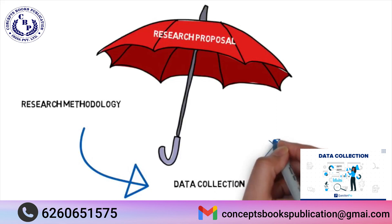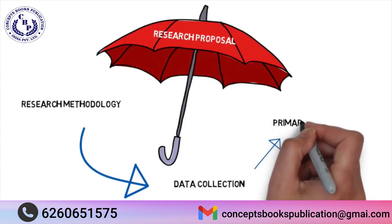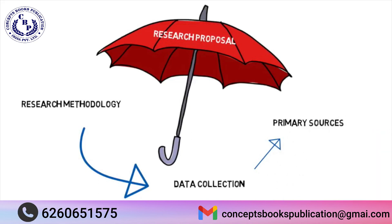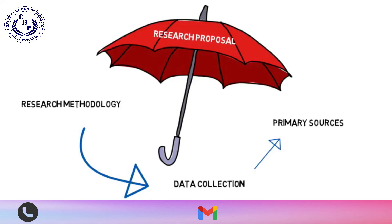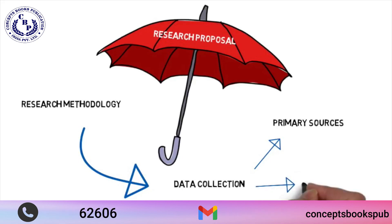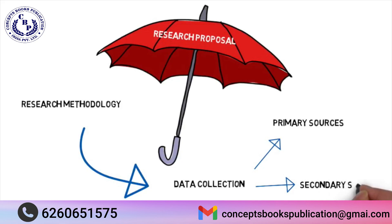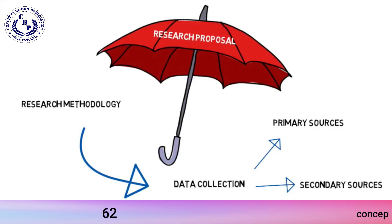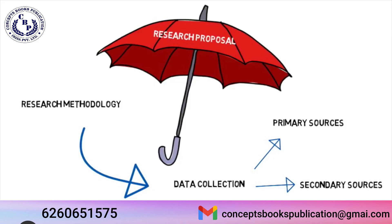The data collection methods fall into two categories: primary sources and secondary sources. Primary sources are original sources collected by the researcher that have never previously been collected — this data is collected first hand using various methods. A secondary source is data that has been previously collected by someone else for a different purpose, and consists of both published and unpublished data.